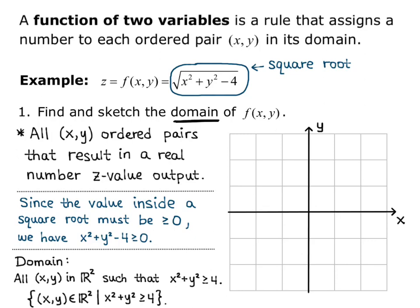We can write this using set notation, the curvy brackets. So, we have bracket x, y in R2, the curved e symbol means is an element of or in, such that, the vertical bar, x squared plus y squared is greater than or equal to 4.